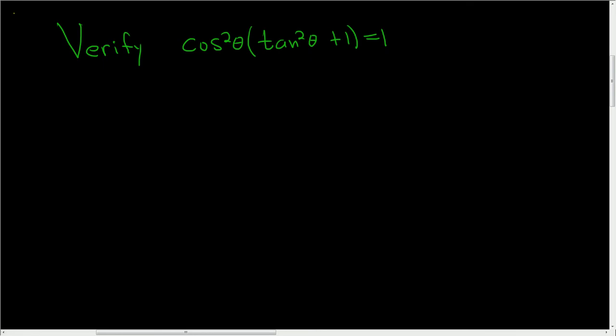We're being asked to verify a trigonometric identity. To verify an identity, one way to do it is to write down one side and show it's equal to the other side. Usually you want to write down the more complicated side. In this case, this is the more complicated side.